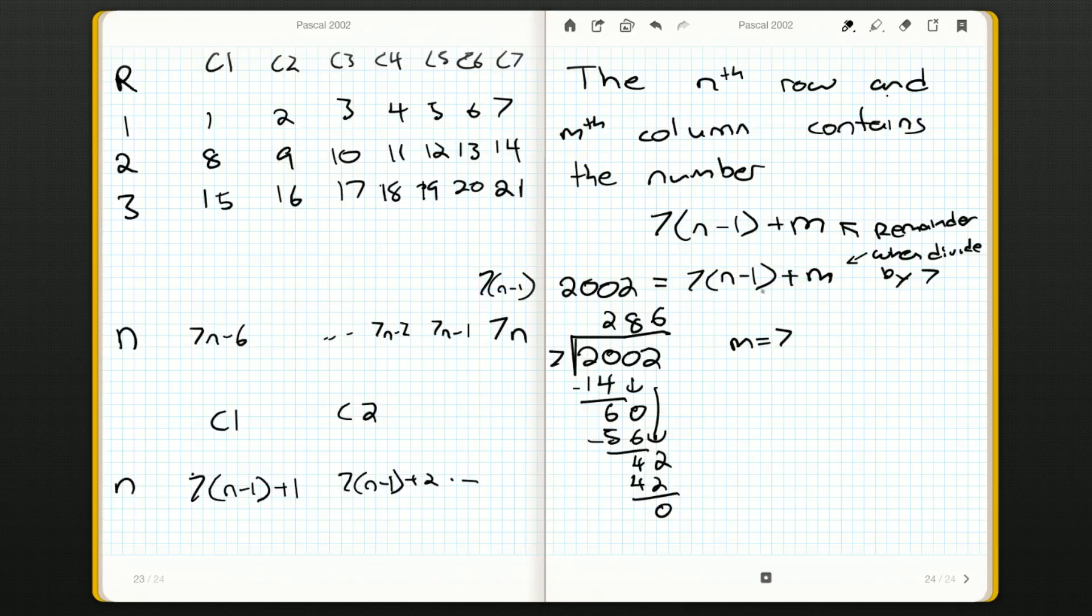And what's N minus 1? Well, 2002 minus M over 7 plus 1 is what N is. So that's 2002 minus 7 over 7 plus 1. We can grab our calculator if we want to, but we don't really need it. I think it's going to be 286 here. Yeah. So it's 286. So 2002 is going to be in the 286th row and the 7th column.